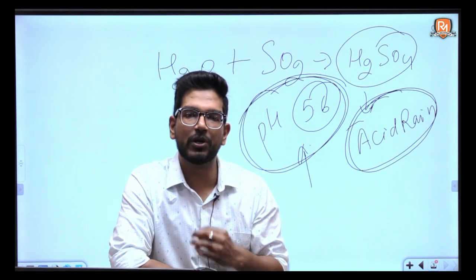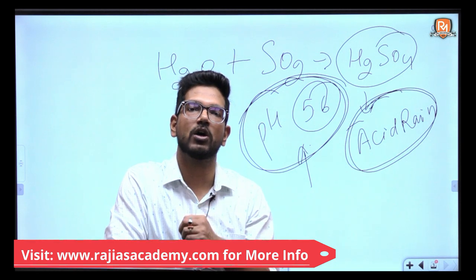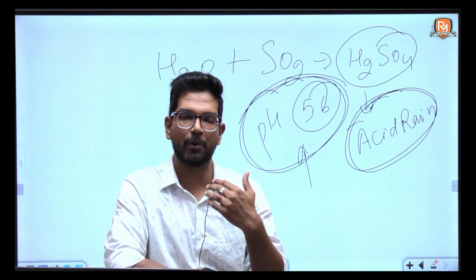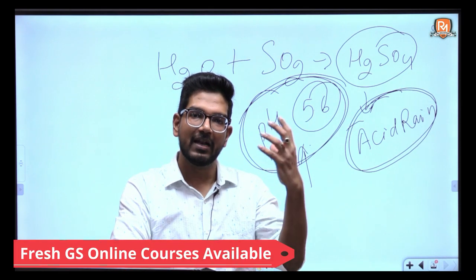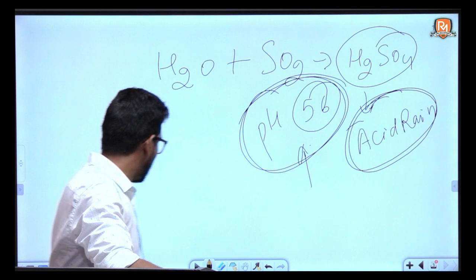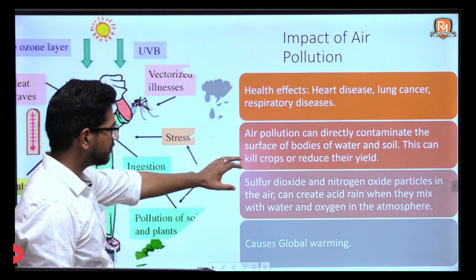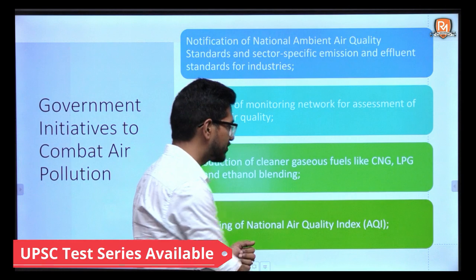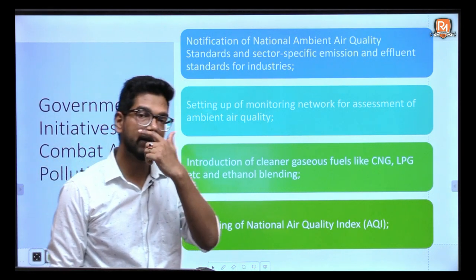Sometimes pollutants are deposited in dry form, which can cause problems of desertification or land becoming barren. And finally, global warming is also a major impact, as explained earlier.